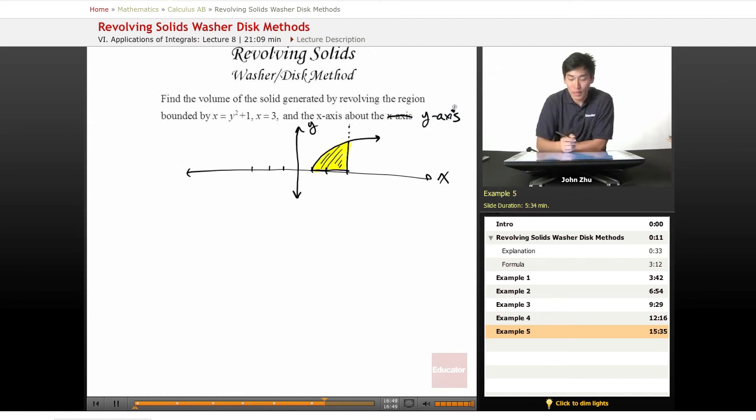Because we haven't done that yet. So we know that x equals y squared plus 1, so let's try to turn that into y in terms of y. So y equals x minus 1, x equals 3. Where do they intersect?